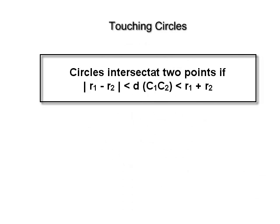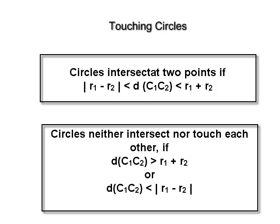Circles intersect at two points if |r₁ − r₂| < c₁c₂ < r₁ + r₂. Circles neither intersect nor touch each other if the distance c₁c₂ > r₁ + r₂ or the distance c₁c₂ < |r₁ − r₂|.